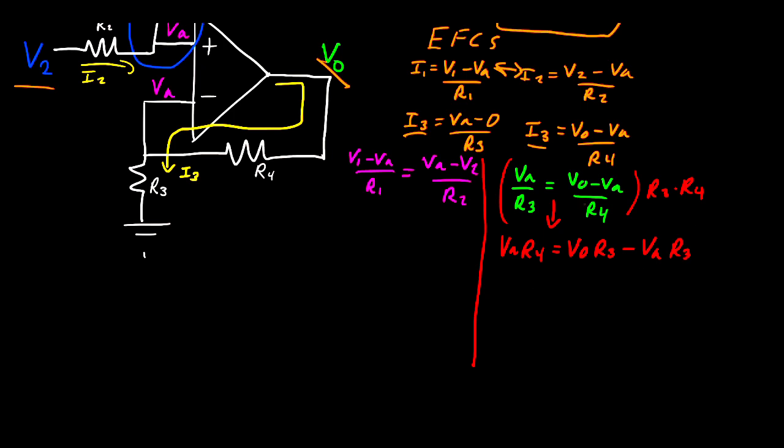Now we can move the VA to the other side and then factor it out. We'll have VA R4 plus R3 is equal to VO multiplied by R3. So this gives us that VA is equal to VO times R3 divided by R4 plus R3.